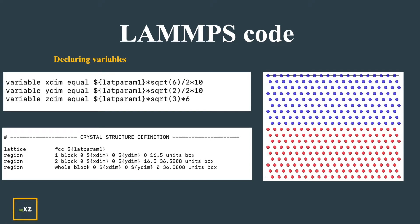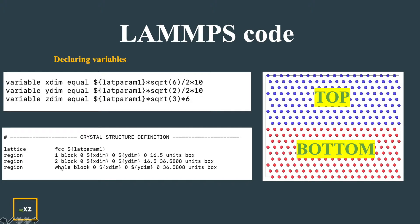Then I declare the crystal structure and define the top crystal and the lower crystal using the region command. I go from 0 to X total length, 0 to Y total length. For the top region 1 I give from 0 to 16.5, which is half the Z dimension, and for region 2 I give from half to the full length of the Z direction. I define a whole region block so I can create a box with that whole region.